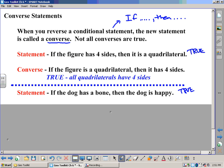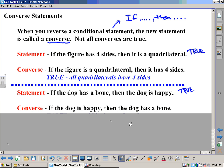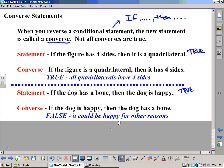Now, what if you reverse it? If the dog is happy, then the dog has a bone. Is that always true? Well, not necessarily, because are there other reasons why a dog could be happy? Yeah, there's certainly a lot of them. So I would write false.